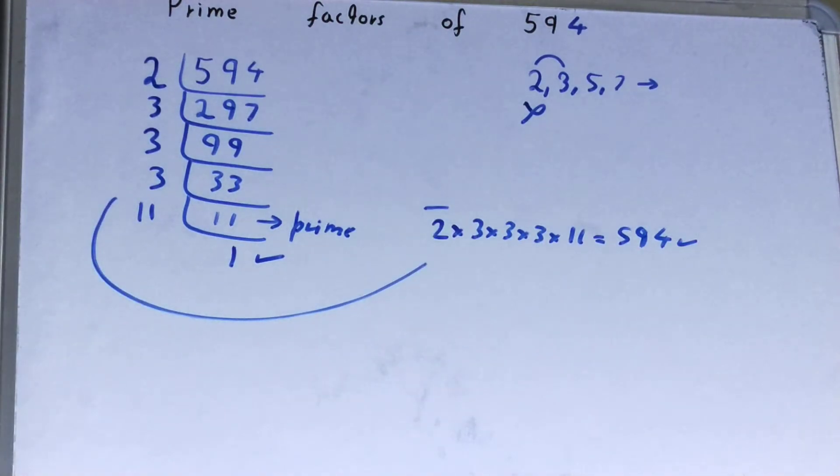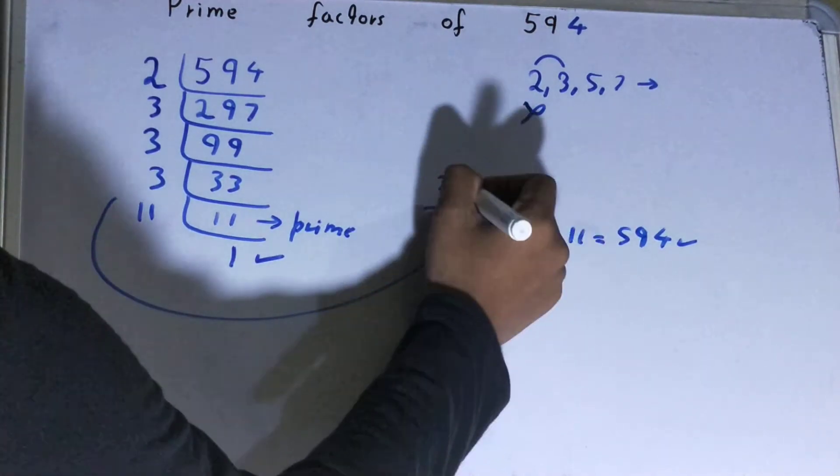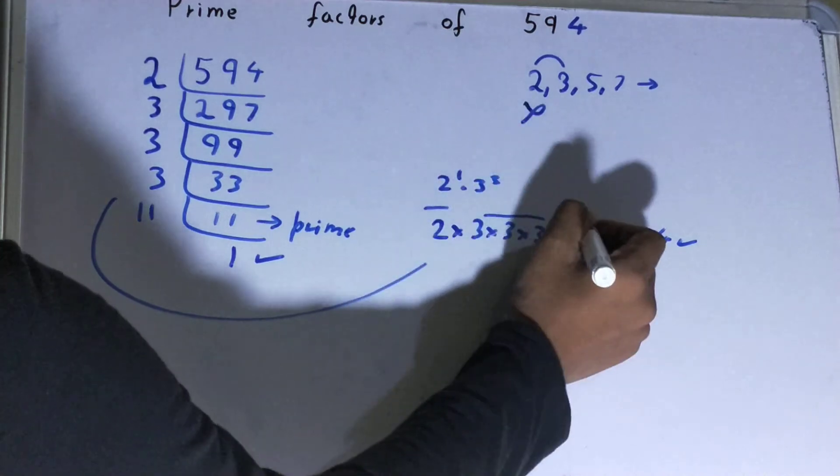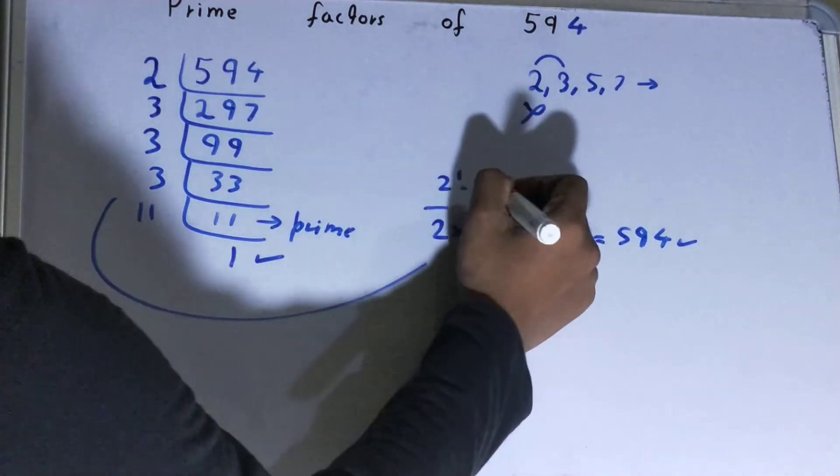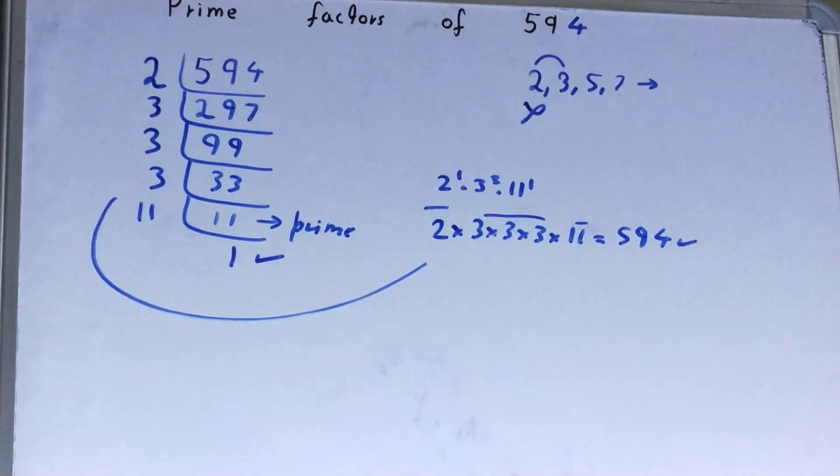You can also rewrite it in a different way. You have one 2, so you can write it as 2 raised to power 1. You have three 3s, so you can write it as 3 raised to power 3. You have one 11, so you can write it as 11 raised to power 1.